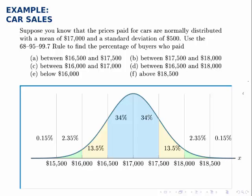Lastly, the final part asks what percentage paid above $18,500, and again there's only one block up there, so 0.15% of buyers paid above that amount.